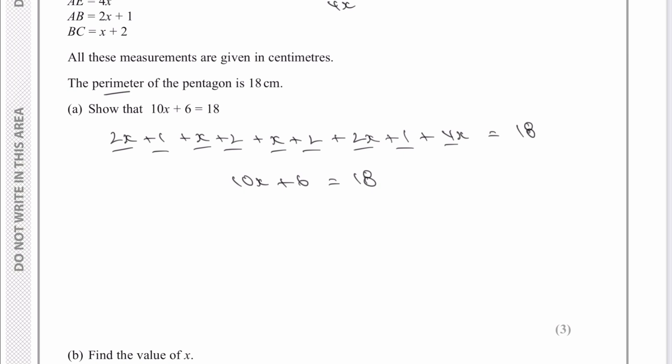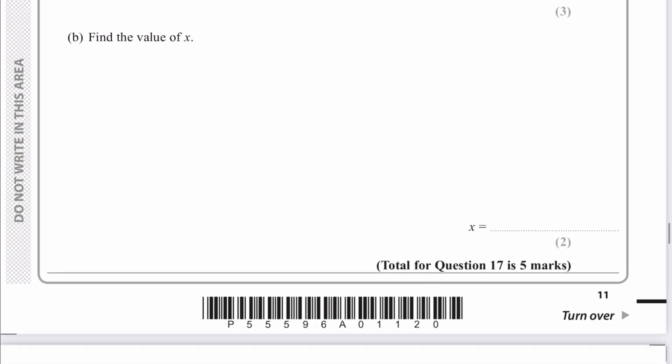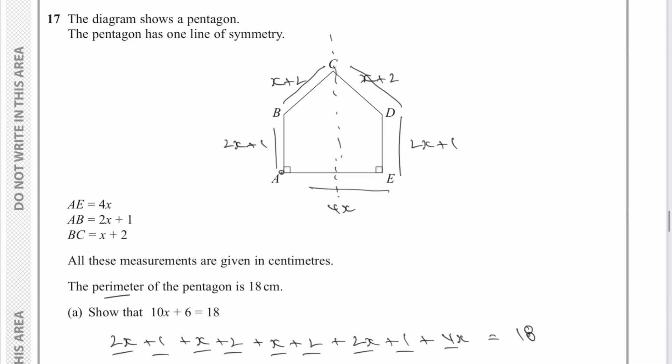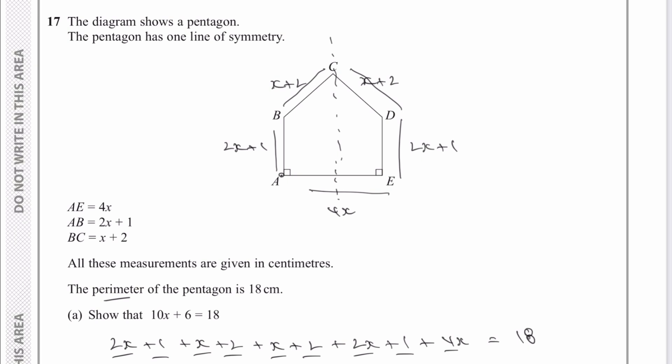And then, really, it's just a case of solving that for X and finding the value of X, which is part B of the question. So I've got 10X plus 6 equals 18. I'm going to take 6 away from both sides, and I'm going to get 10X equals 12, and then I'm going to divide through by 10 both sides, and I'm going to get X equals 1.2. So therefore, the value of X is 1.2 for part B of that particular question. Please do download this particular paper and have a go at these questions for yourself.